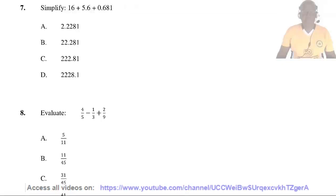Question 7. Simplify 16 plus 5.6 plus 0.681. That is 16.0 plus 5.6 plus 0.681. 8, 12 carry 1, 11, 12, 2. So the answer is B, 22.281.